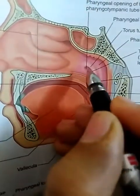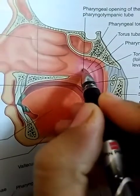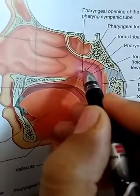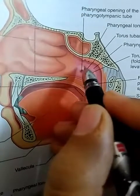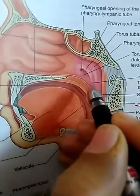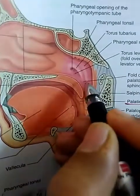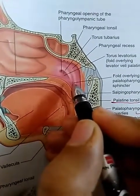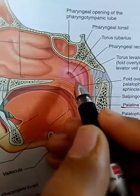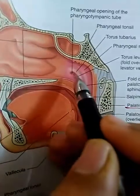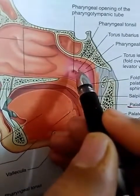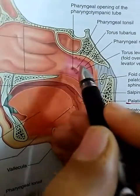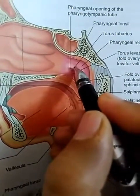Above the pharyngeal opening there is an elevation called the torus tuberius, which lies above and behind the opening. On the posterior side there is a fold which overlies the palatopharyngeal muscle or palatopharyngeal sphincter. The torus tuberius is an important landmark because the fossa of Rosenmuller lies just behind it, and that corresponds to the internal carotid artery.